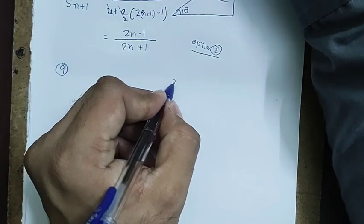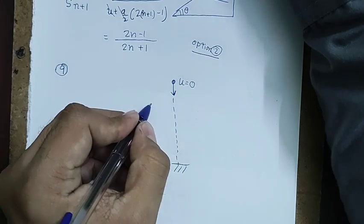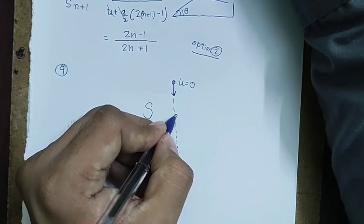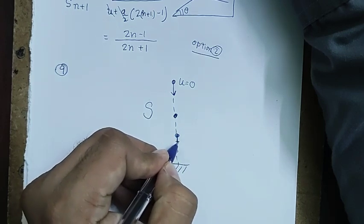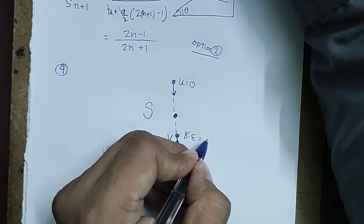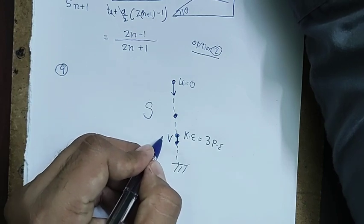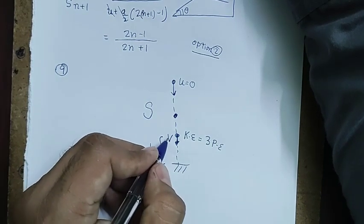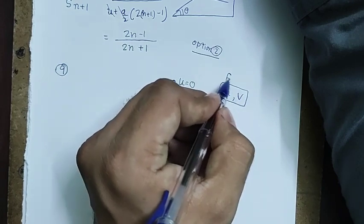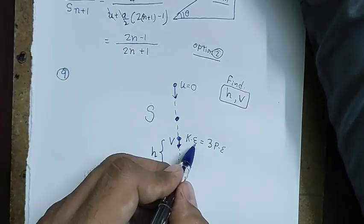Question 9: a body is released from height s. At some intermediate height h, the kinetic energy is 3 times the potential energy. We need to find h and the velocity at that point.